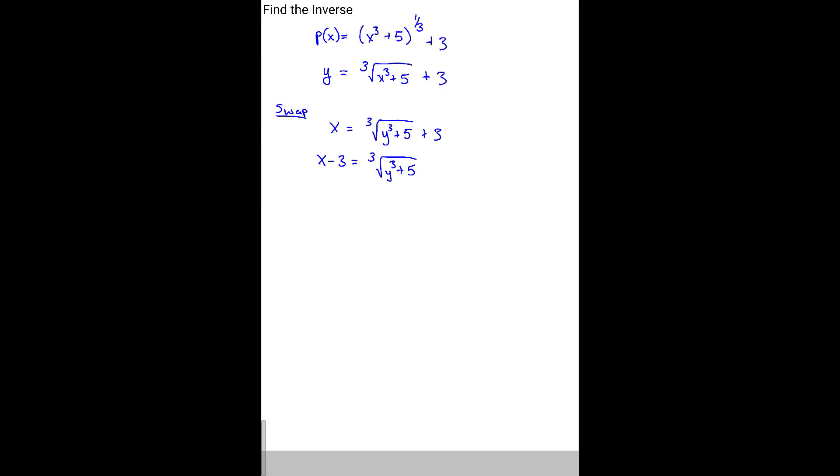Now, to unravel or undo that cube root, we've got to take the third power on both sides. So when we take the third power, we raise both sides to the third power, which in turn cancels out this 3 and this 3 right here, which means it cancels out the whole root. So what we have left is an x minus 3 to the third power equals y to the third plus 5.